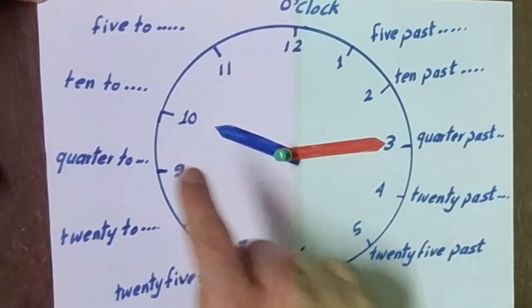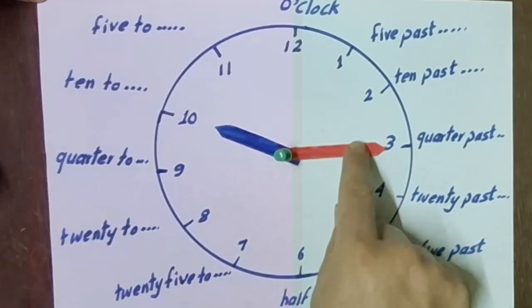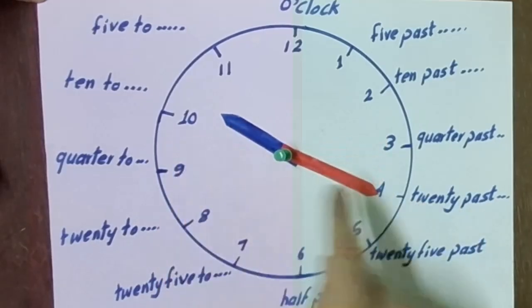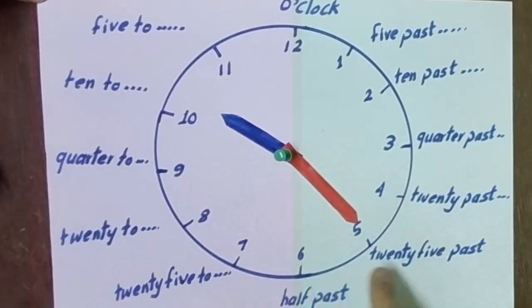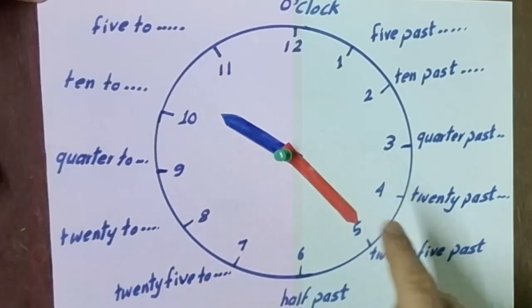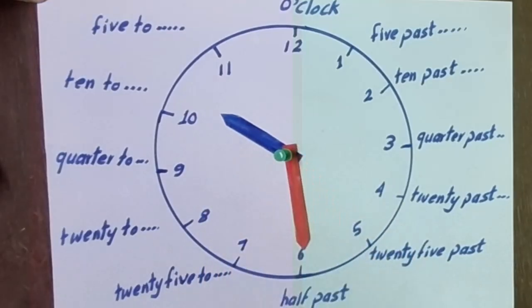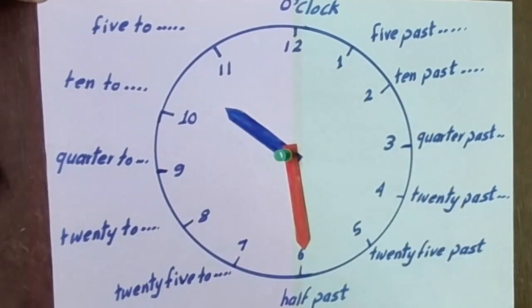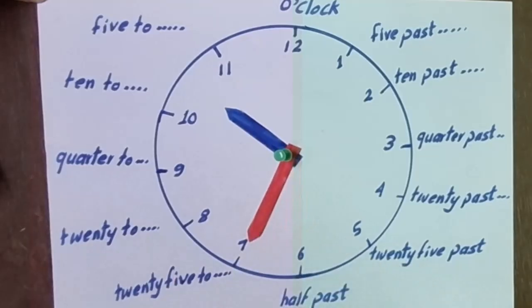When the long hand goes to 3, we say 'quarter past ten.' When it goes to 4, we say 'twenty past ten.' When it goes to 5, we say 'twenty-five past ten.' When it goes to 6, we say 'It's half past ten.'